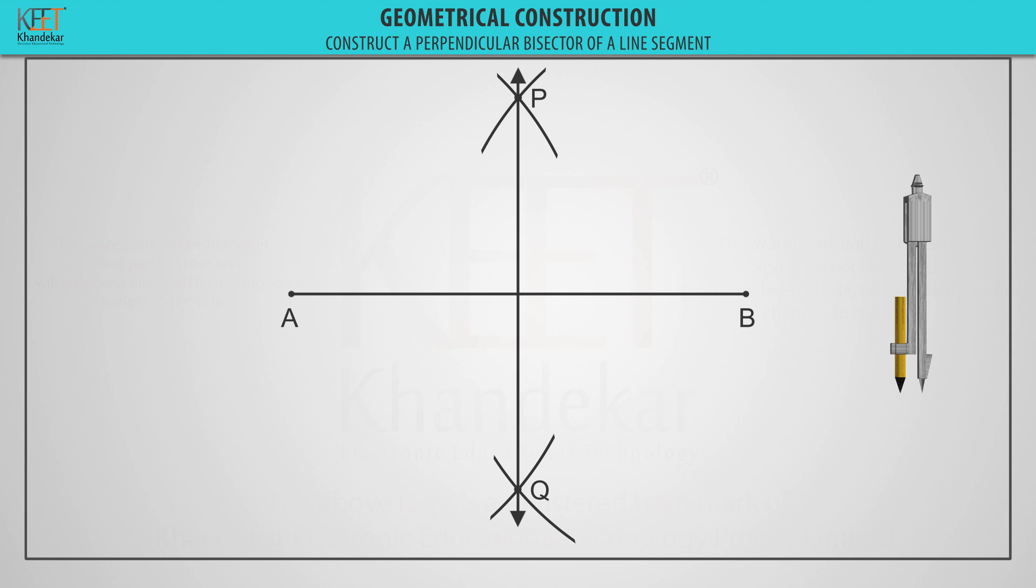Now, name the point of intersection of the line segment and the perpendicular bisector as point M.